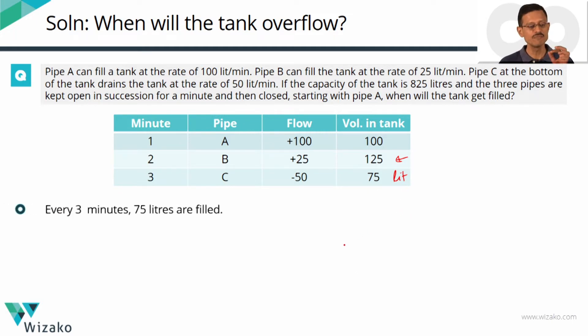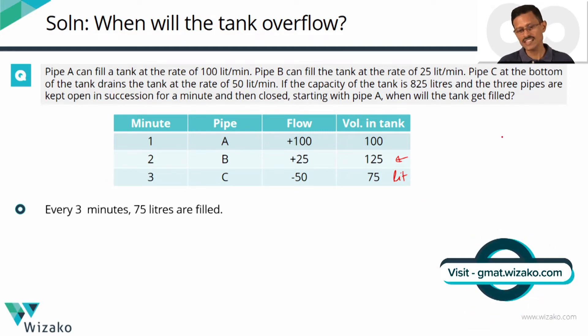These questions it makes sense to think of it in cycle terms rather than in terms of per minute. Think of it a cycle of three minutes adding 75 liters into the tank. Is this the same as saying that every three minutes you have 75 liters, 75 by three these pipes are filling at the rate of 25 liters per minute. Can we quickly summarize it this way?